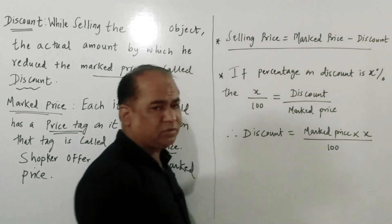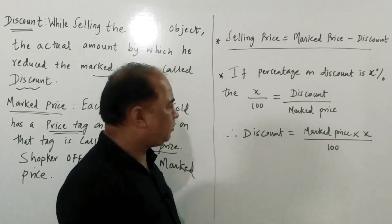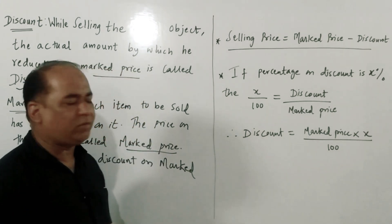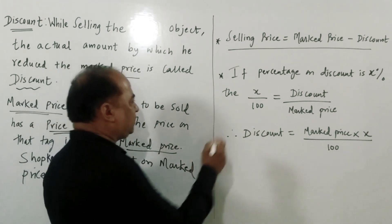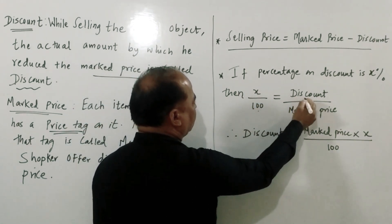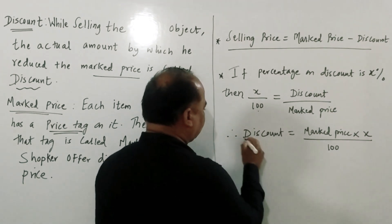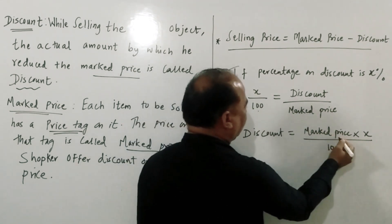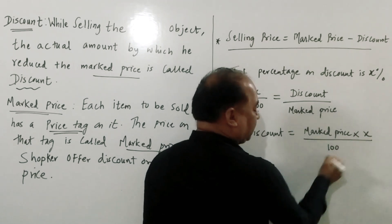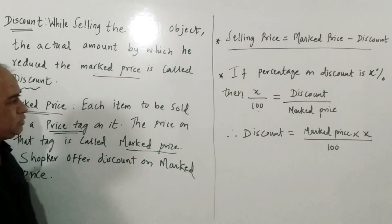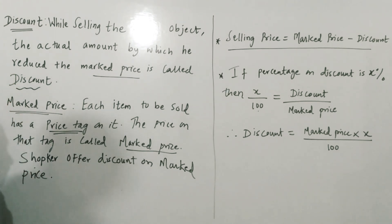Selling price is equal to mark price minus discount. And if the discount is in the form of a percentage, then the formula is: x upon 100 is equal to discount upon mark price. Therefore, discount is equal to mark price multiplied by x upon 100. These two formulas we are going to use to solve the examples of practice set 9.1.